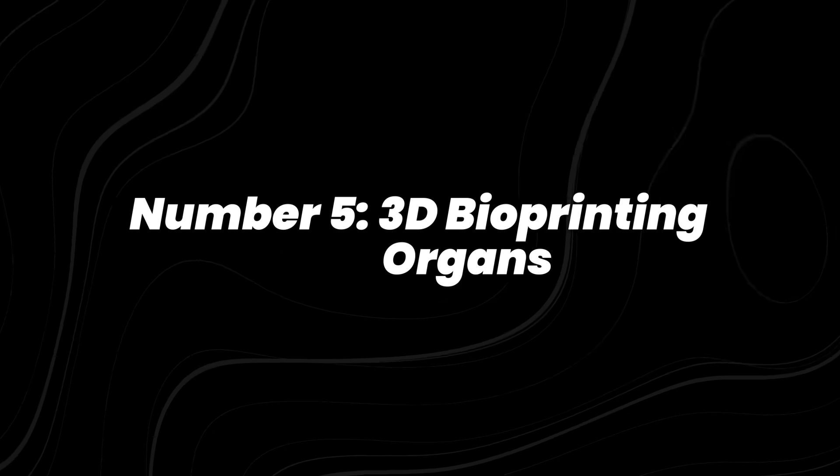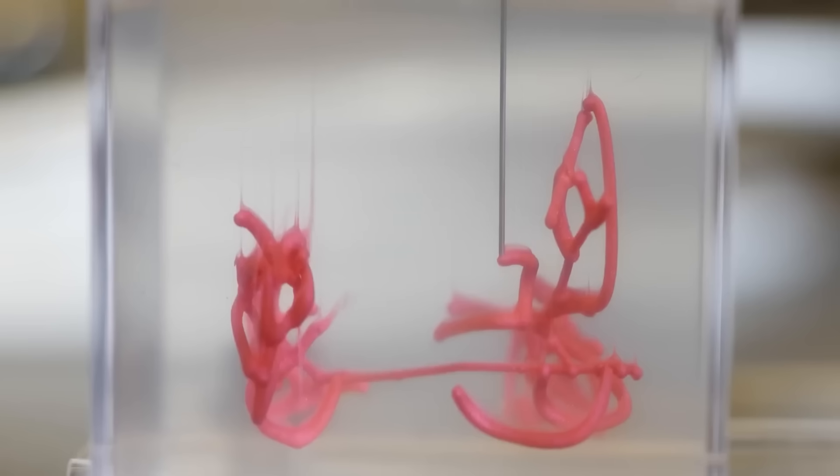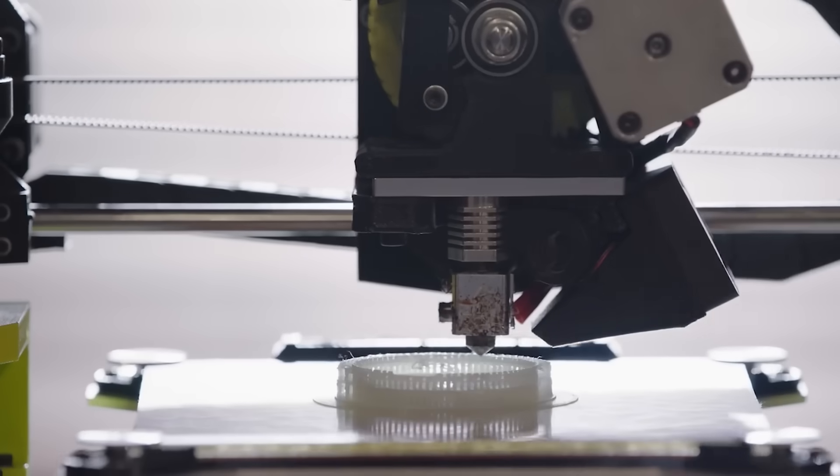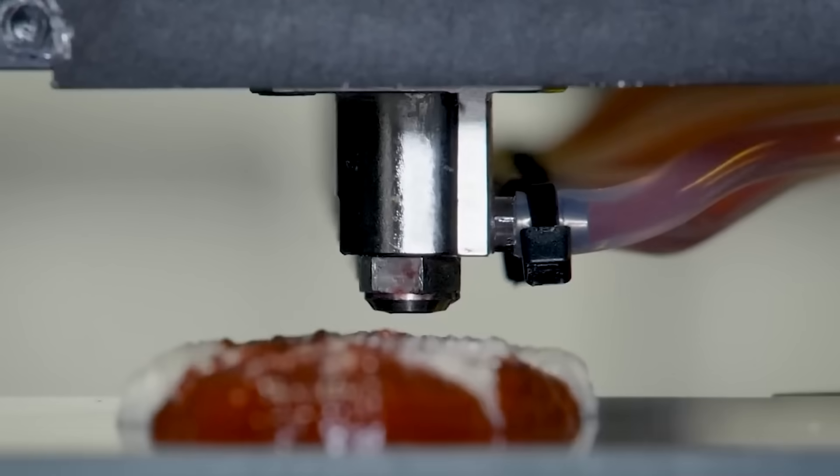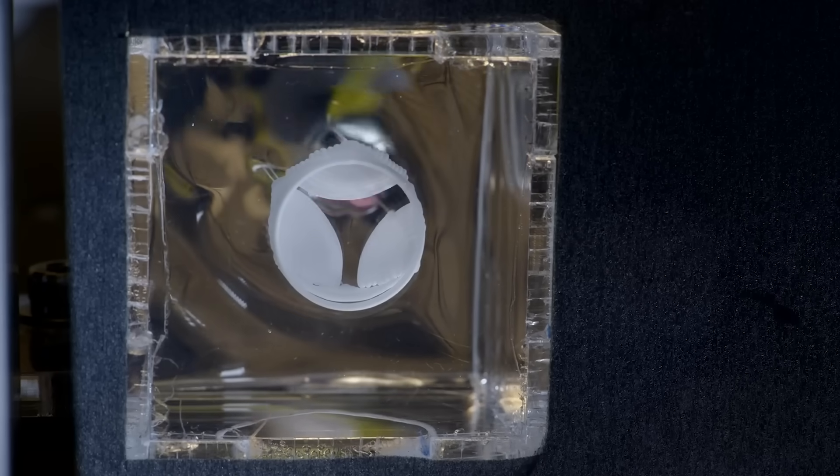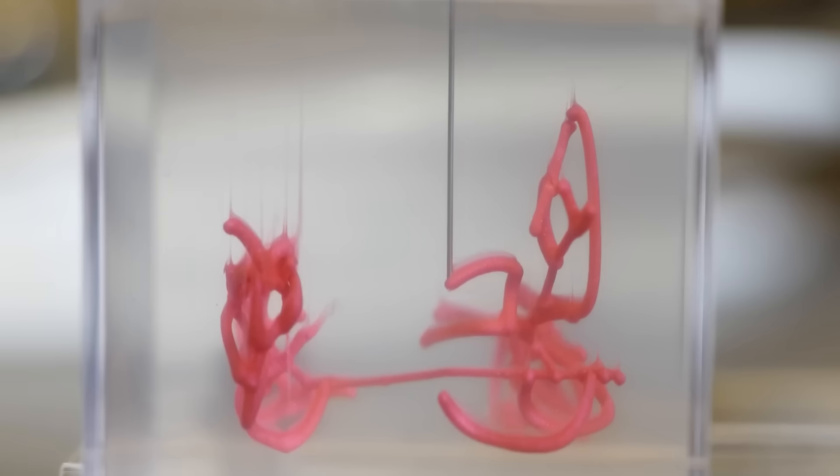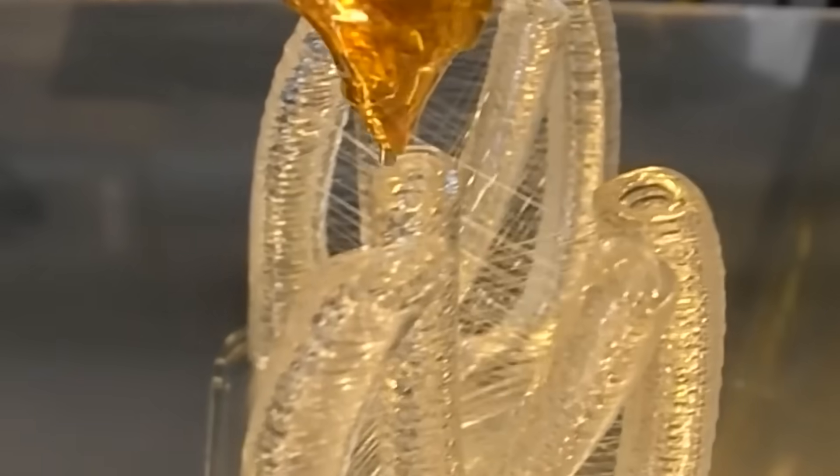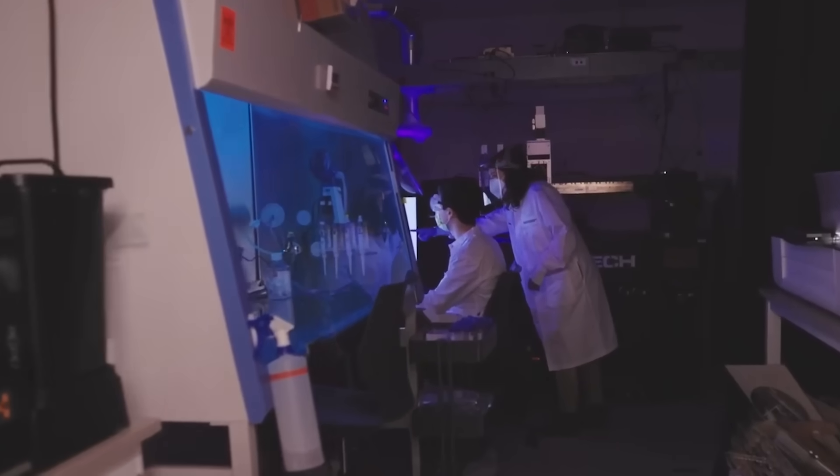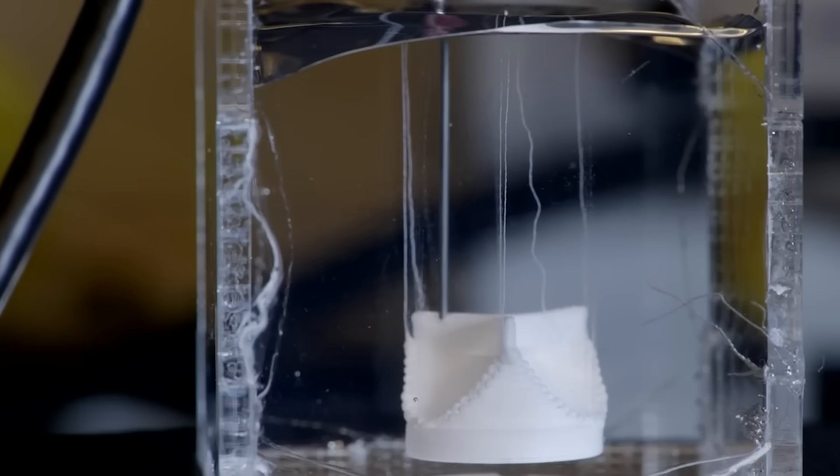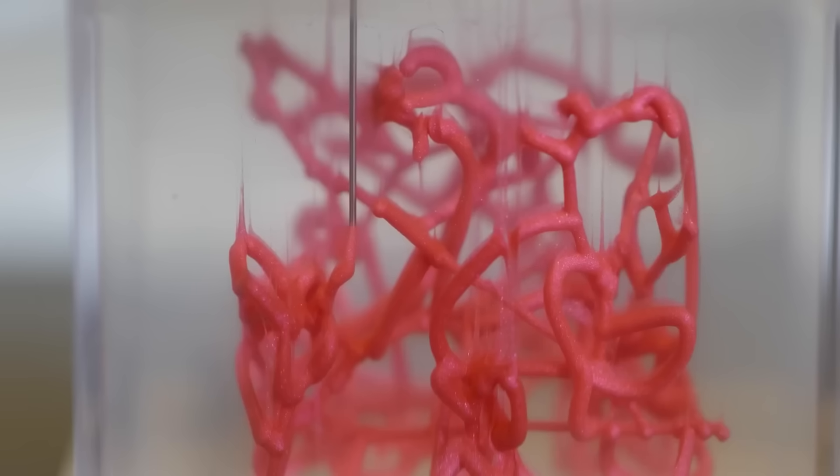Number 5, 3D bioprinting organs. 3D bioprinting is moving from concept to clinical progress in 2025. Research labs and companies are already printing functional tissues such as skin, cartilage, and miniature heart models for testing and surgical training. Earlier this year, the FDA granted breakthrough device designation to a bioprinted trachea project, accelerating its regulatory review. Full organ transplants are not available yet, but the steady advances show how customized lab-printed tissues are becoming a real tool in medicine, one that could eventually transform how patients receive life-saving treatment.